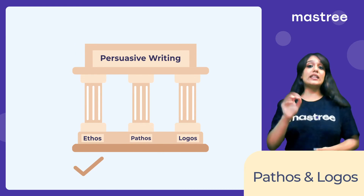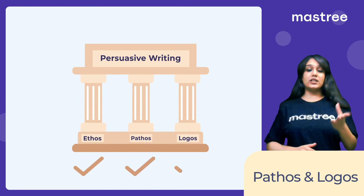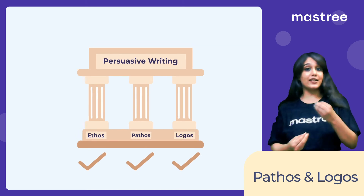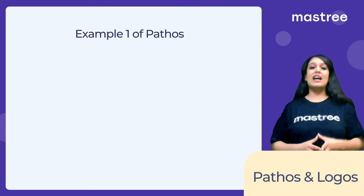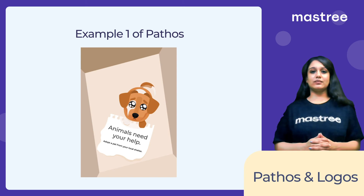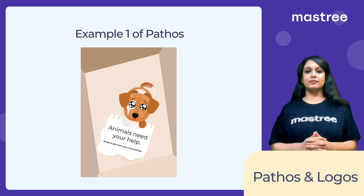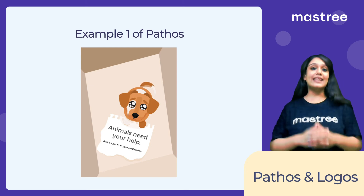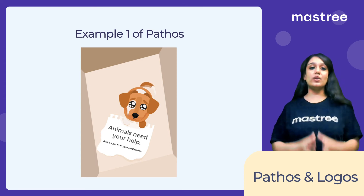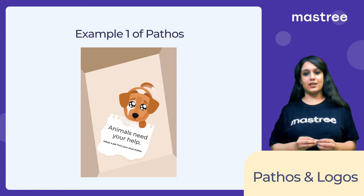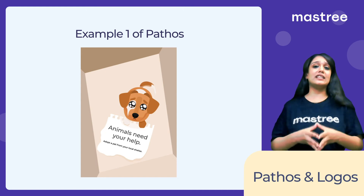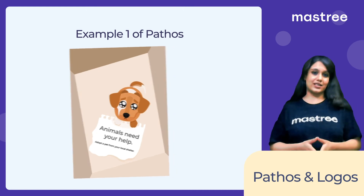So, in this video we looked at pathos and logos and how they help our writing become more persuasive and convincing. Now let's look at a few examples before we conclude this video. This ad is clearly designed based on pathos as it is trying to evoke sadness and empathy in the target audience. It is trying to convey the idea that dogs in shelters need a loving home and that we should take some action.